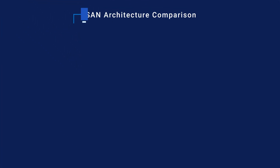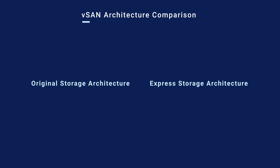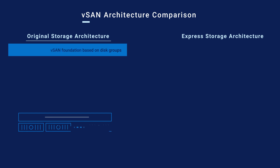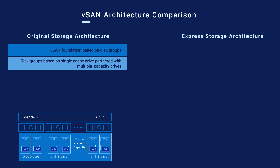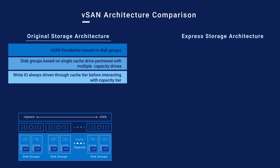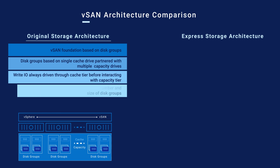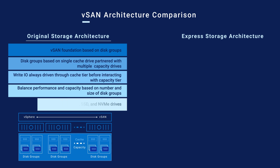Let's start by distinguishing the original and express storage architectures, or vSAN OSA and ESA, from each other. The vSAN OSA foundation is built off of disk groups. These disk groups each contain a cache drive along with multiple capacity drives. Write I/O hits the cache disk first before being moved to the capacity tier. You can adjust the number and size of the disk groups to find the desired balance point between performance and capacity. OSA supports hard disk, solid state, and NVMe drives.